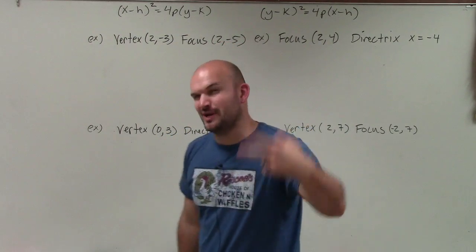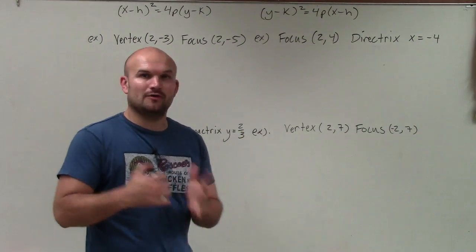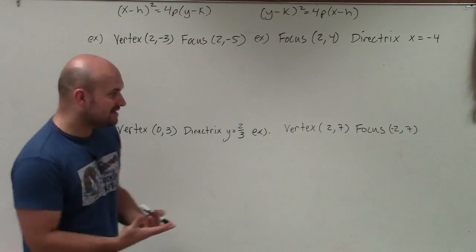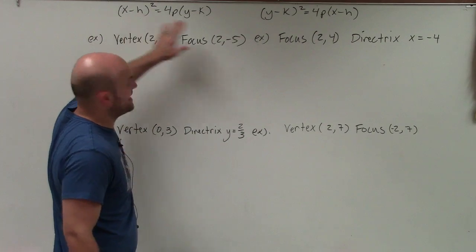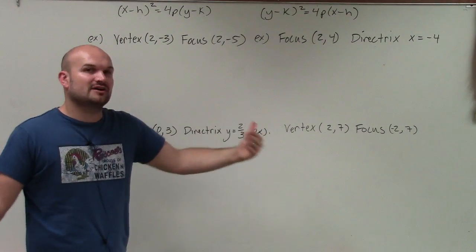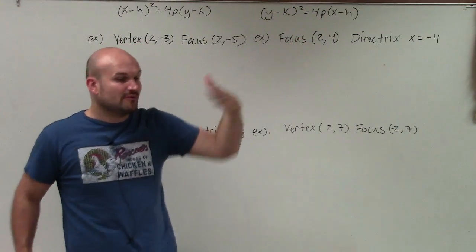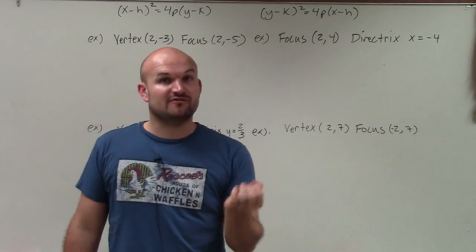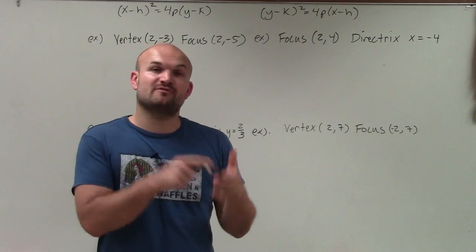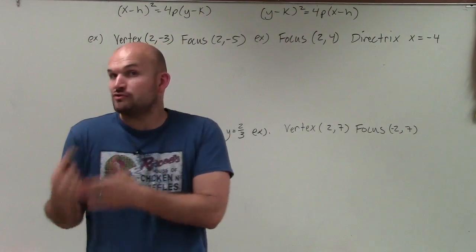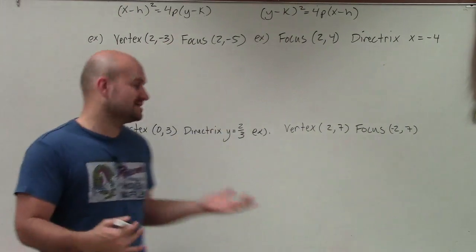However, I only give you two — we always leave out one. We don't need all three pieces of information. To write the equation of a parabola, all we really need is h and k, which is the vertex. Then we need the value of p. Remember, p is the distance from the vertex to the focus, and the opposite of p is the distance from the vertex to the directrix.